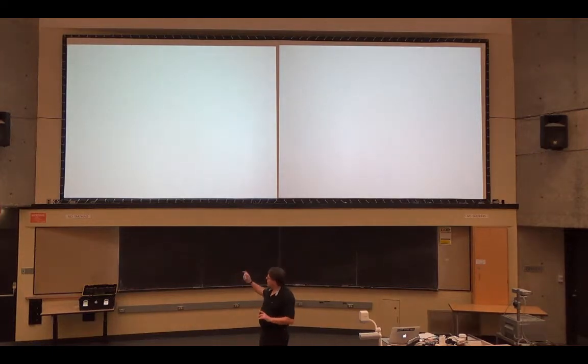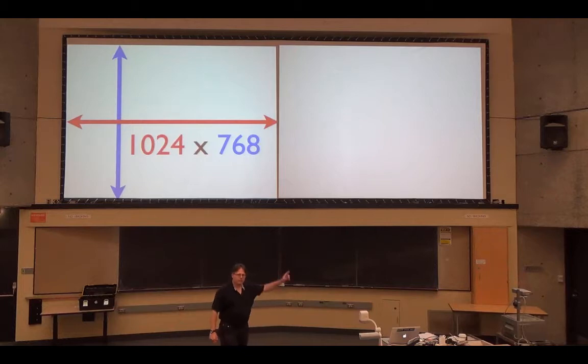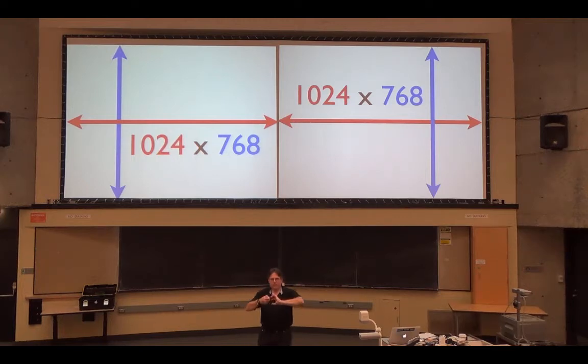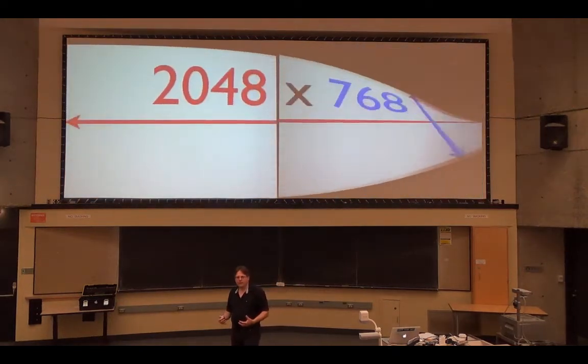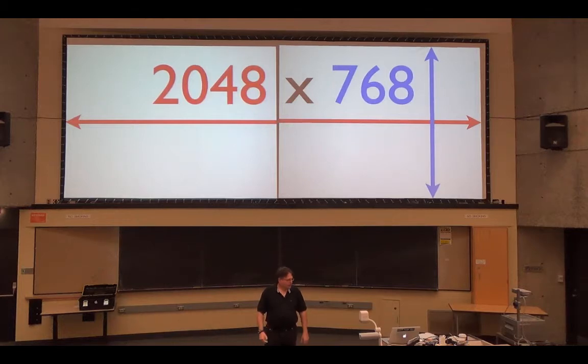What it's doing is it's saying this projector over here is VGA, 1024x768. This projector over here is 1024x768. What we're going to do is we're going to mash those together into one video signal coming into the Matrox box, which is 2048x768. So we're going to take that signal and split it across the two.